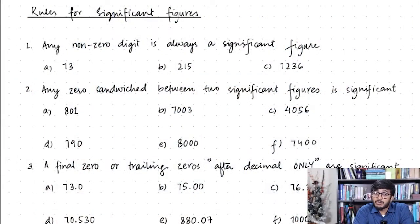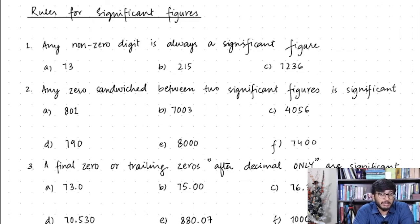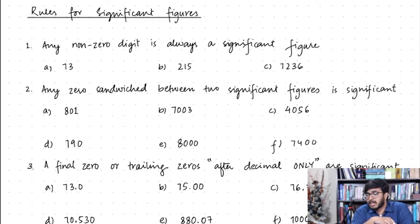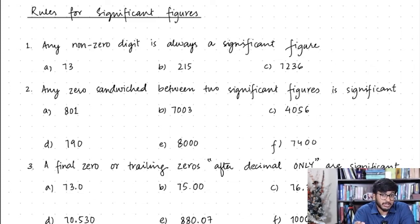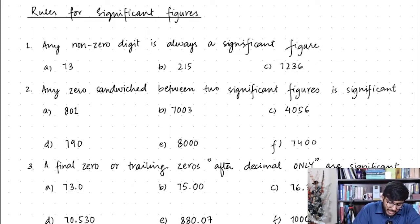Before we get to the question of how many significant figures we should answer, we need to know whether a number has two, three, four, five, or any number of significant figures. There are three basic rules that are laid down to decide the number of significant figures in any numeric value. The first rule says that any non-zero digit, from one to nine, is always a significant figure.